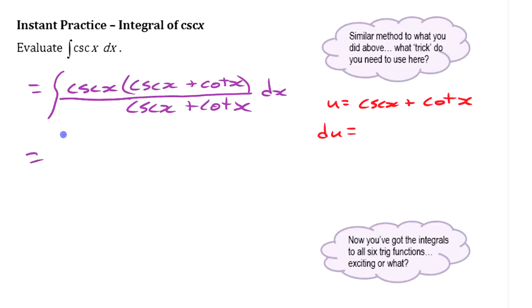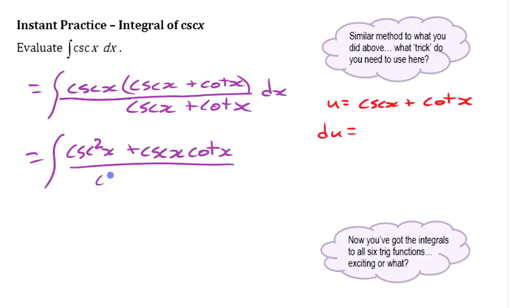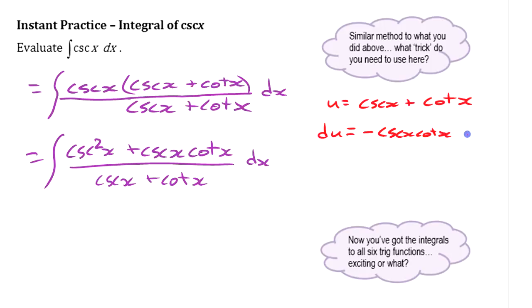Let me multiply this out: on top we get cosecant squared x plus cosecant cotangent x, and on the bottom we still have cosecant x plus cotangent x. For du, we take the derivative of each term — making sure to include the minuses: it's negative cosecant x cotangent x minus cosecant squared x. I can factor out that negative, so minus du equals the positive sum of those terms.